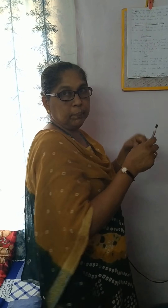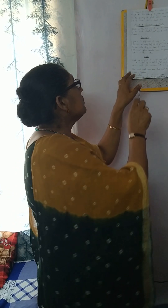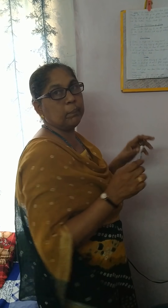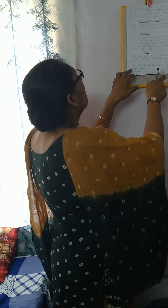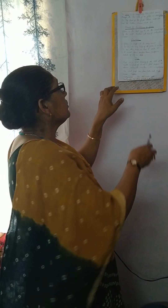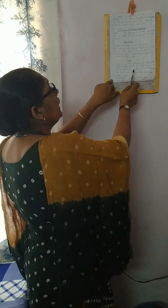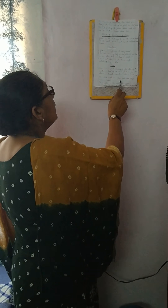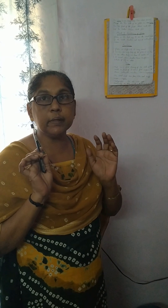Now we are going to learn about the map. A map is a flat drawing of the earth, or part of it, on a flat surface. It shows continents, countries, cities, or neighborhoods.